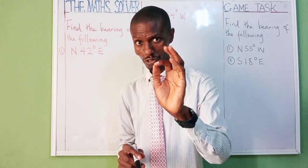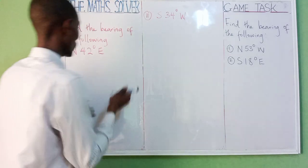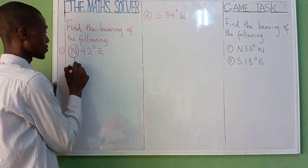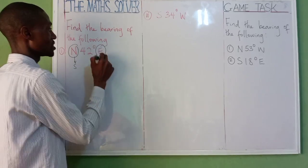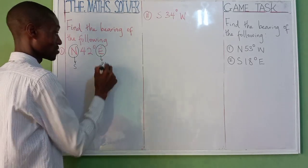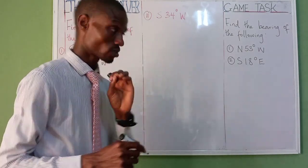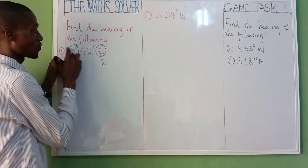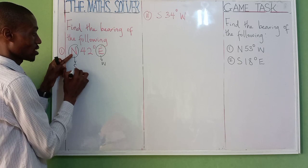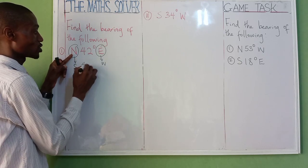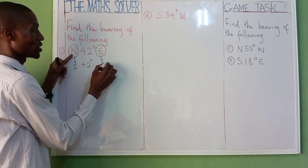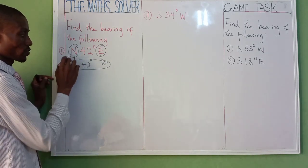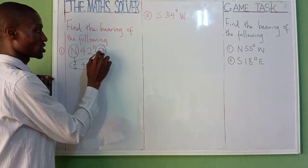How do you solve it easily under five seconds? Note that the opposite of north is south, and the opposite of east is west. To find the bearing quickly, just swap to the opposite directions. So the opposite of north is south, and the opposite of east is west.